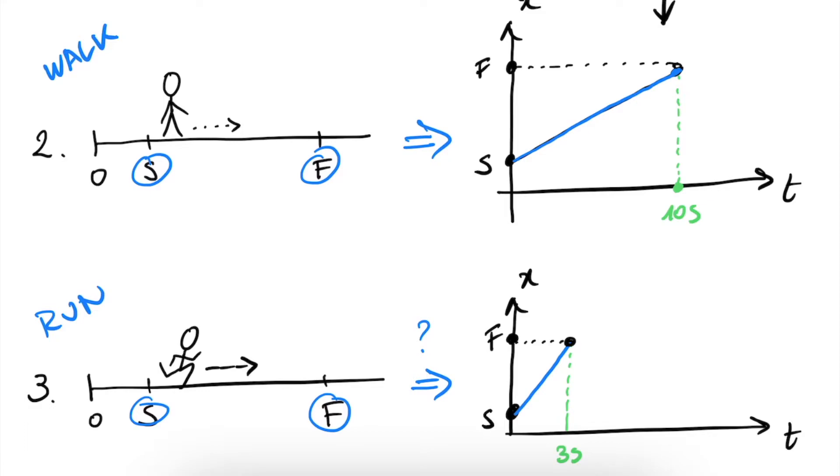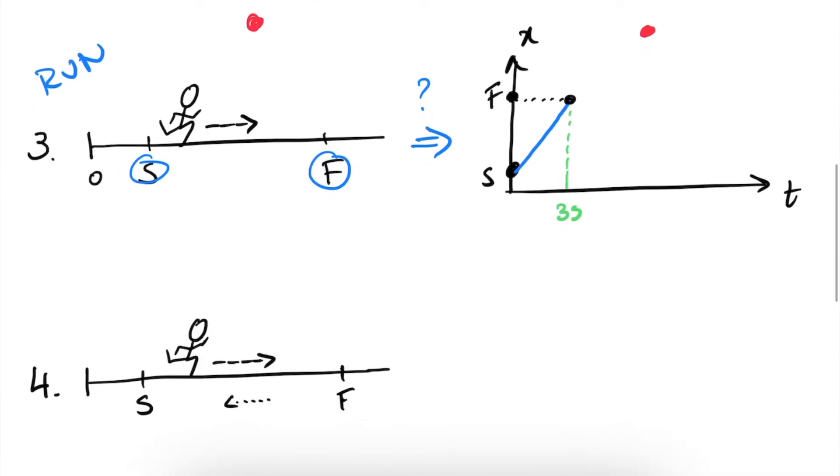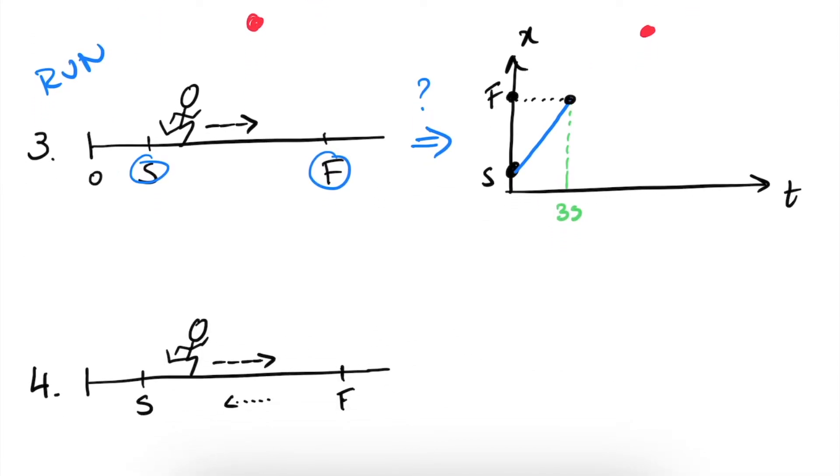These are all uniform motions where we go from S and we end up in F. And these are all clearly representable either in this scenario with a stick figure, but also on this XT diagram. However, what is not represented in this stick figures, or not easily represented, is if we run towards our final destination. So here we run, but then we walk back. So now we go from S to F, but we also go back from F to S again. We make a round trip. Now this is very difficult to represent on this stick figure diagram.